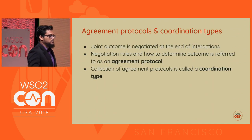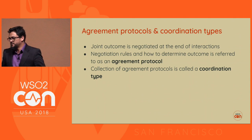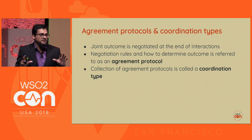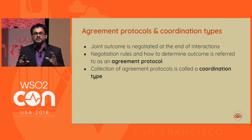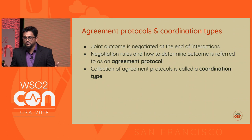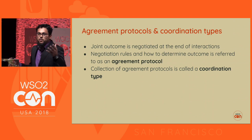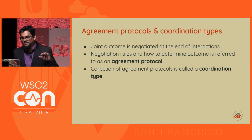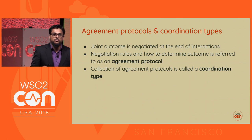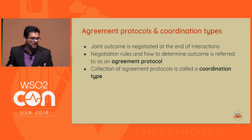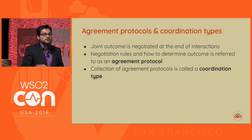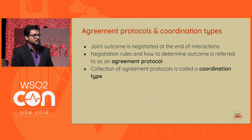Now we come to agreement protocols and coordination types. At the end of the day, we have a sphere of control with a number of microservices that must come to a decision on whether the transaction can be committed or not. The decision these services make together is called the joint outcome. There should be some protocol to negotiate this joint outcome, called the agreement protocol. A collection of agreement protocols is known as a coordination type.